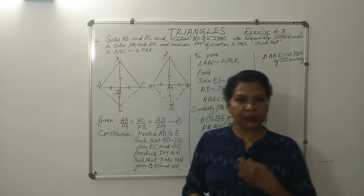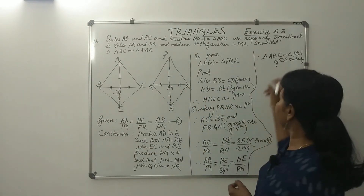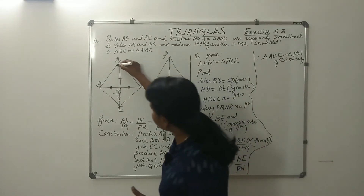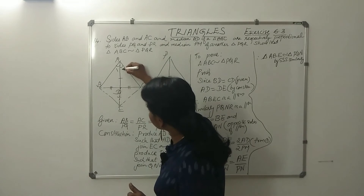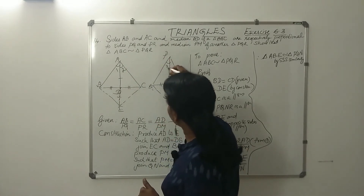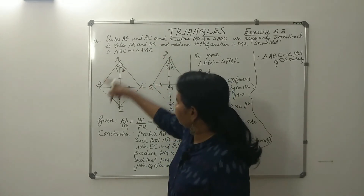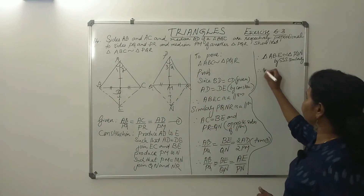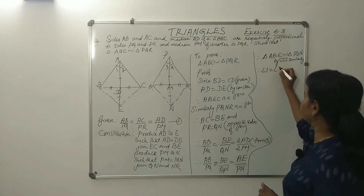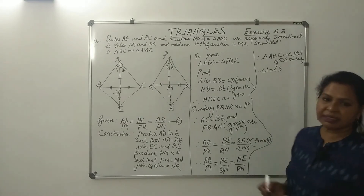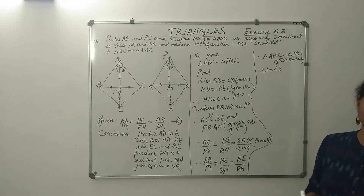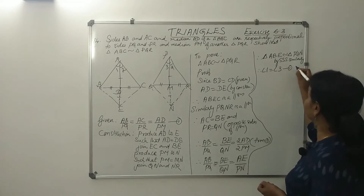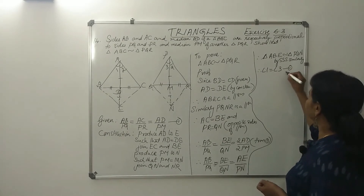Now, we have to show angle A equal to angle P. Since similar triangles have equal corresponding angles, we write angle 1 equal to angle 3. In the reason: corresponding angles of similar triangles — let me write it shortly as CPST.